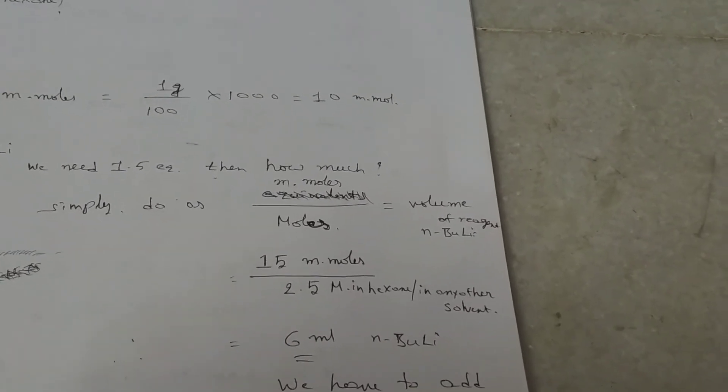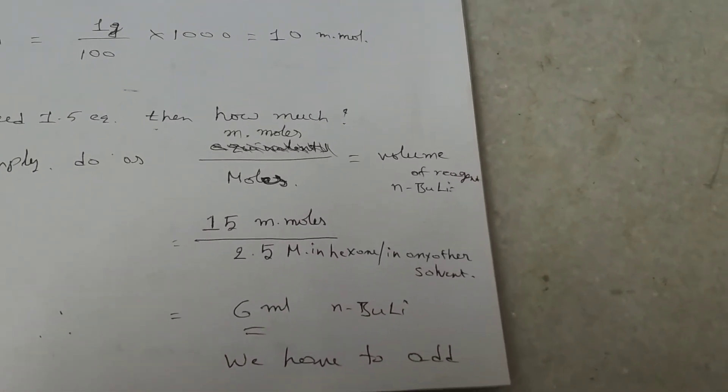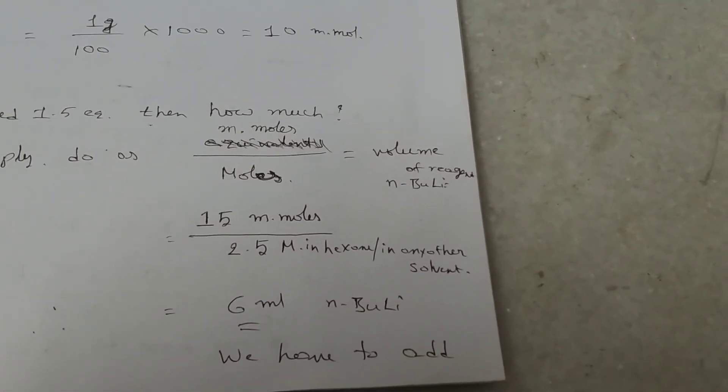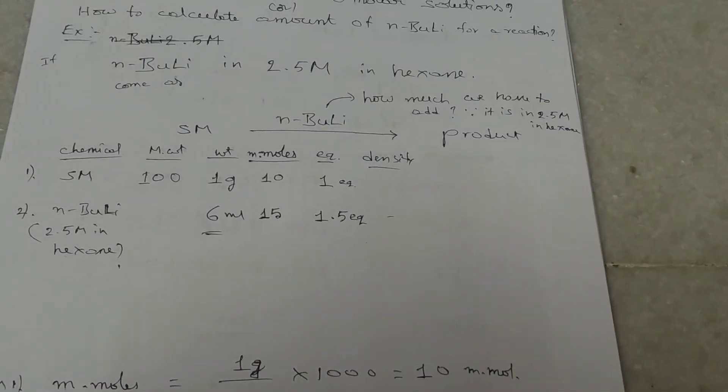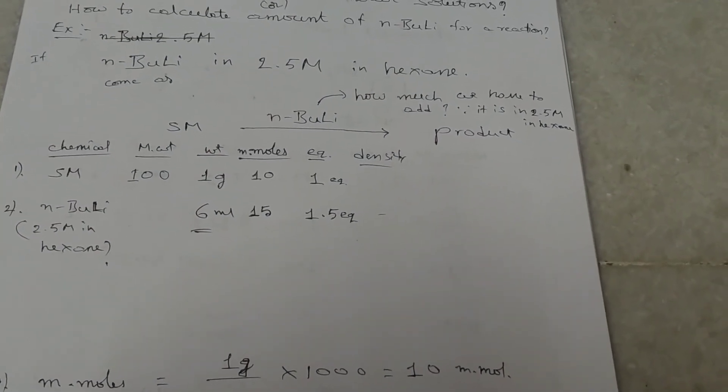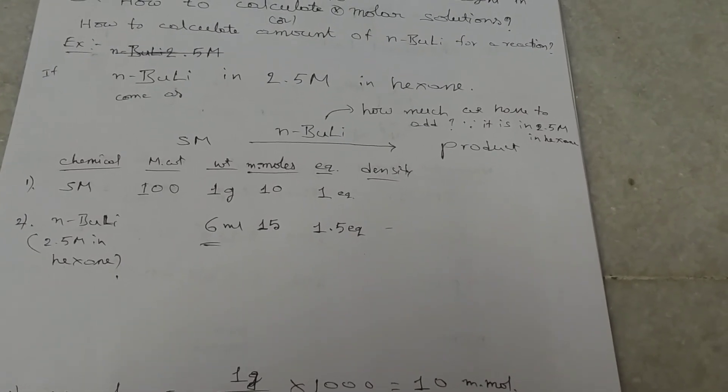Volume of reagent is, then it will come as volume of reagent. Suppose here, we need 1.5 eq. So 1.5 into 10 is equal to 15 millimoles. We got.